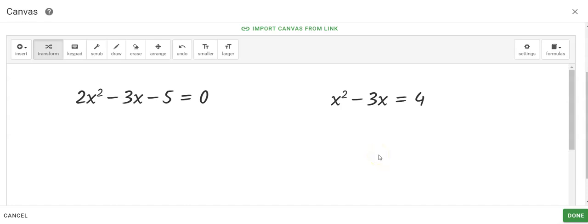Today we're solving quadratic equations that are in standard form using the quadratic formula. So the first equation you see here, 2x squared minus 3x minus 5 is equal to 0, is in standard form.